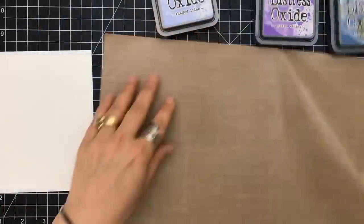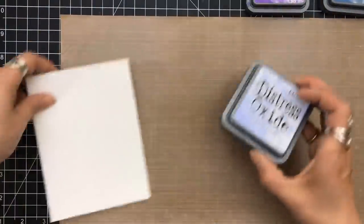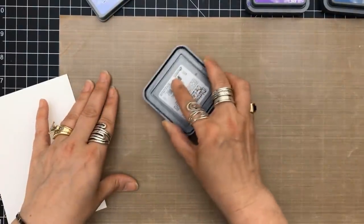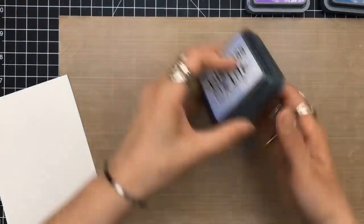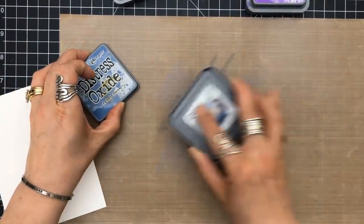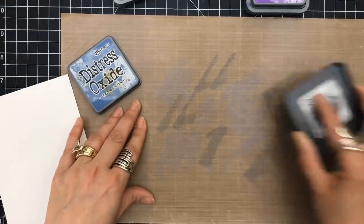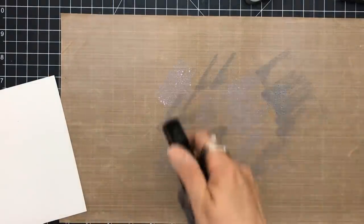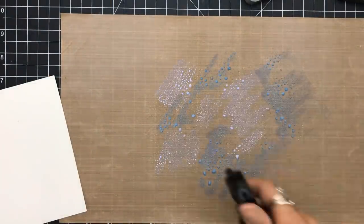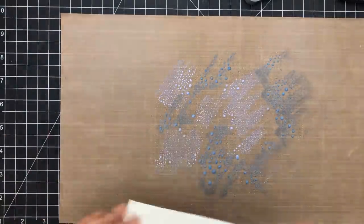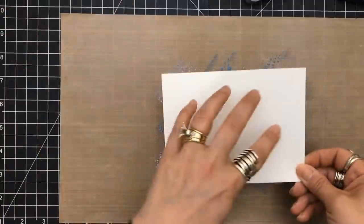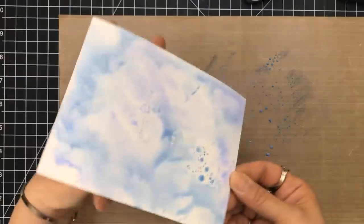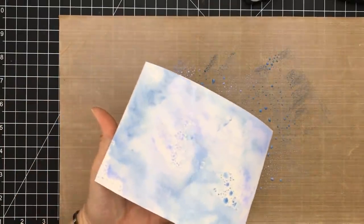Let's get started on the first card. We're going to do some ink smushing and the two colors I'm going to use are Shaded Lilac and Faded Jeans. I'm not going to use the Wilted Violet. The Shaded Lilac is only going to give me just that hint of purple I was looking for. I grab my craft mat, lay down my oxides, and once I have it spread out I use water.